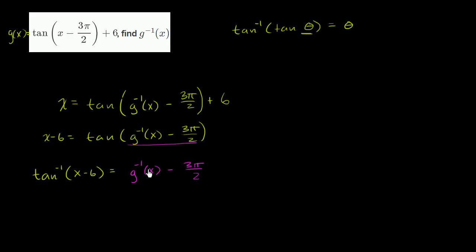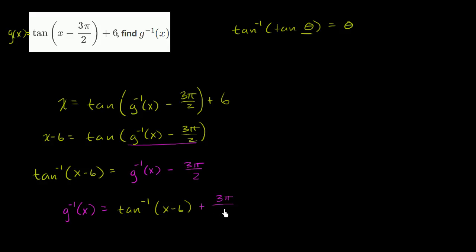Now we're in the home stretch. To solve for g inverse of x, we add 3π/2 to both sides. Swapping sides, we get g inverse of x equals the inverse tangent of x minus 6 plus 3π/2. So: inverse tangent of x minus 6 plus 3π/2.